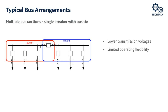Building on the single bus design, we have the multiple bus section or single breaker with bus tie design — commonly referred to as main-tie-main schemes — seen a lot in industrial applications at lower voltages. It offers limited operational flexibility: zone 1 and zone 2 loads each carry roughly 50% of the load. If one bus zone is lost, we can pick up 50% of load on the other bus, providing some reliability and the ability to maintain one bus while keeping loads in service.